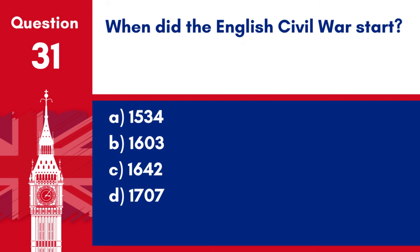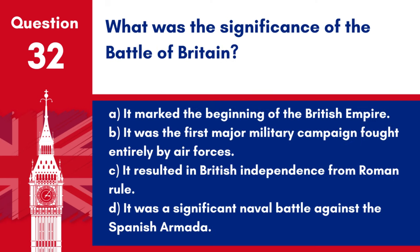Question 31. When did the English Civil War start? a. 1534. b. 1603. c. 1642. d. 1707. Answer: c. 1642. The English Civil War began in 1642.